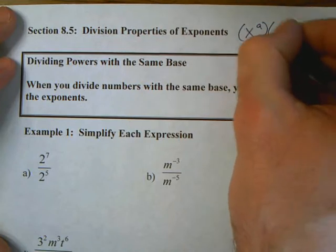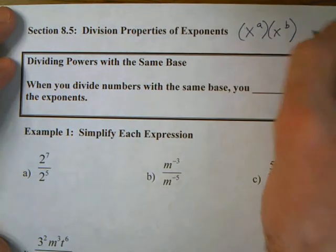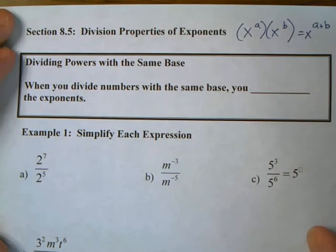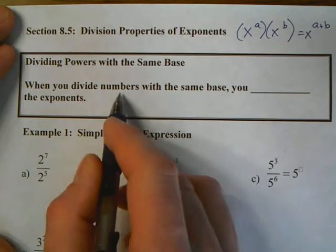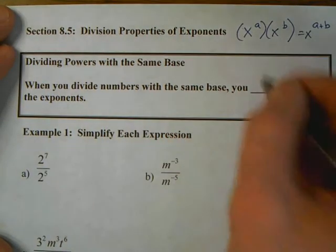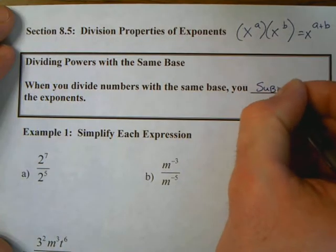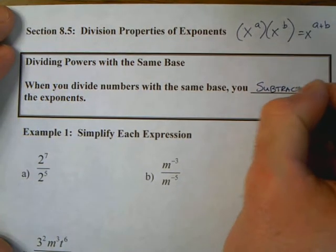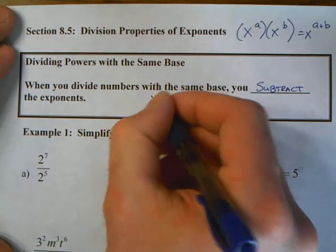When we had a power times another power, we added the exponents. We're all very familiar with that idea. Well today, when you divide numbers with the same base, you subtract the exponents.